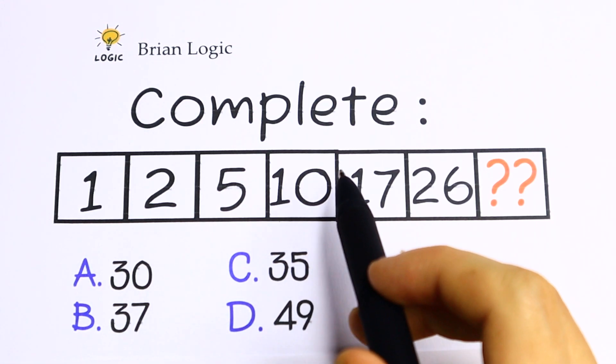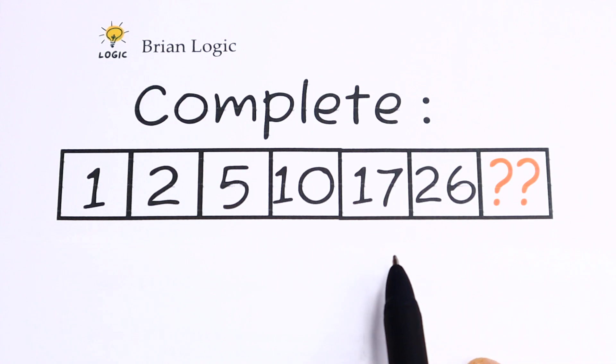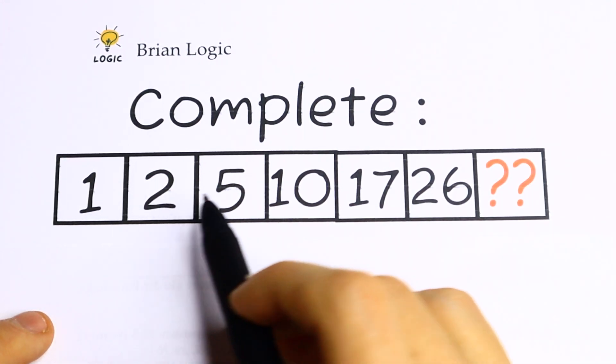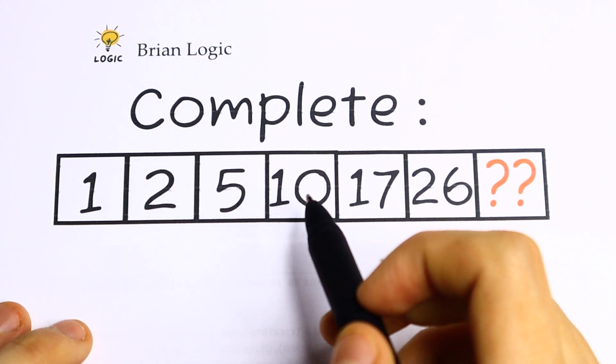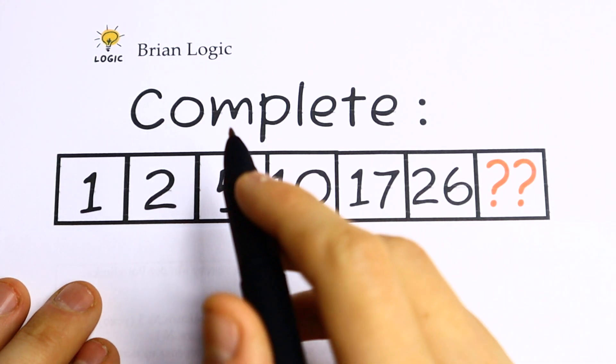So let's try to solve it. On the first side there is no pattern between all of these numbers. We have 1, 2, 5, there is no common thing about these numbers. But take a look what I can see right now.